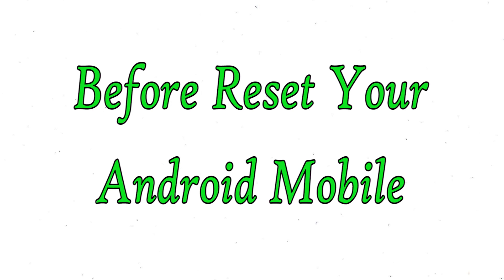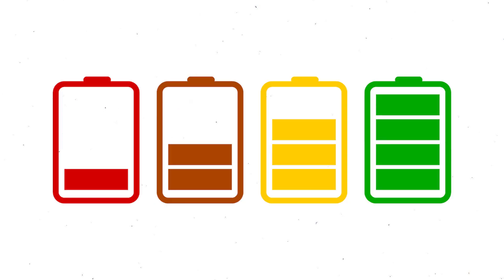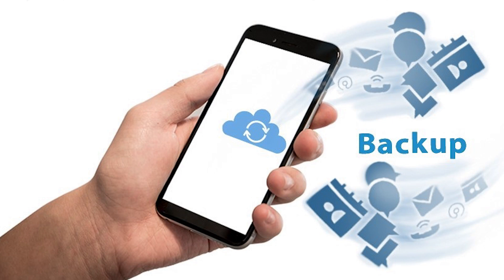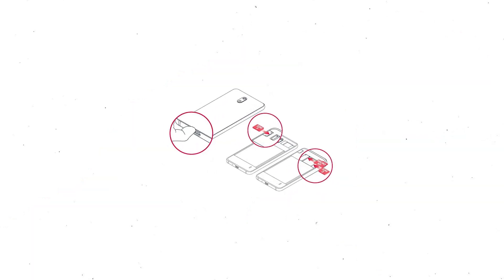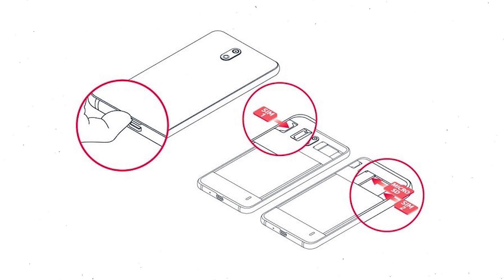Before resetting your mobile, make sure the battery is properly charged — if less than 50%, charge your mobile. You need to make sure that the data on your device is backed up so you do not lose valuable photos or documents. Reset deletes all your mobile data, so you better back up all important data and remove your SIM and SD card.